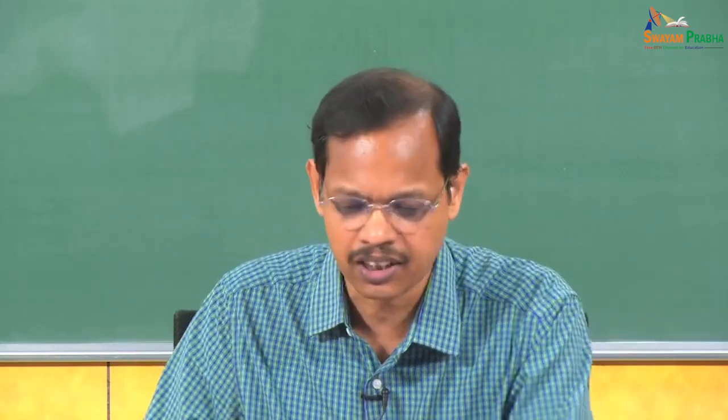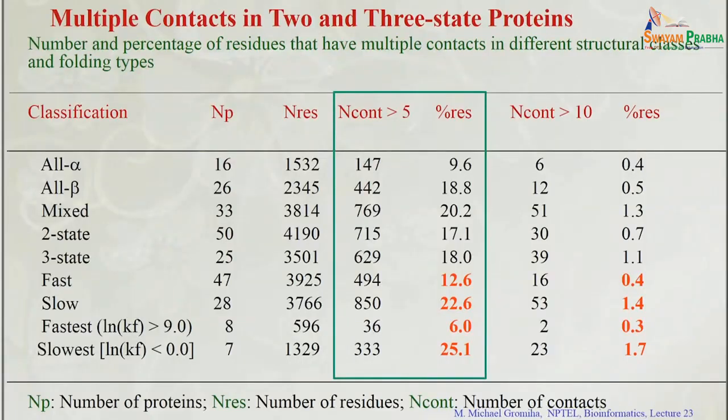In the case with 20 residues, all 25 different residues are making contacts from different positions, so it takes time to get all contacts. We have different classifications: alpha, beta, mixed, and fast and slow folding proteins.